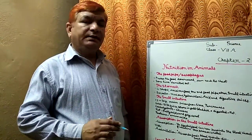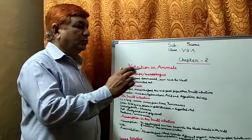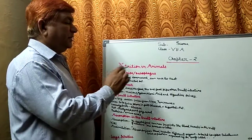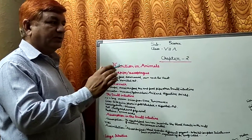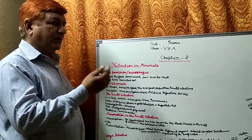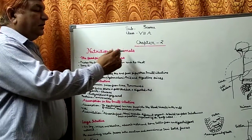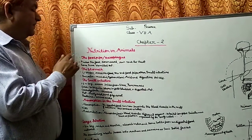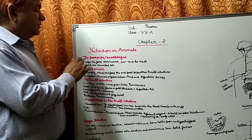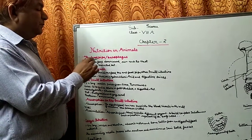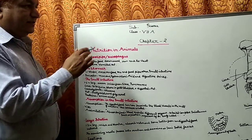I am starting Chapter 2 remaining part - Arthak Chapter 2 ka Shesh Bhag. The chapter name is Nutrition in Animals. Topic is the food pipe, oblique oesophagus.